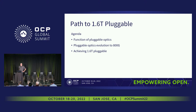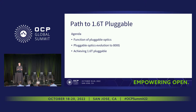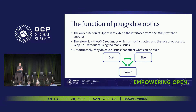We'll talk about the function of pluggable optics just as a primer — I'll go through that really fast because most of you probably already know that. Then we'll talk about how we got to 800 gig today, what the pros and cons are, and then we'll go forward on how we extend that to the 1.6T pluggable form factor.